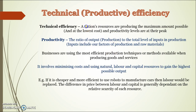Technical efficiency means a nation's resources are producing the maximum amount possible at the lowest cost, so we're maximising our productivity — maximising the amount of output per unit of input. We're assuming that we're using the most efficient production techniques, minimising costs, and using our natural, labour and capital resources to maximise our output.